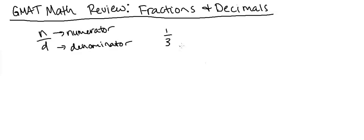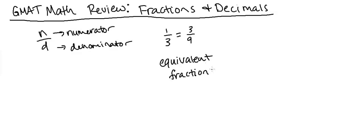Now let's talk about equivalent fractions. The word equivalent really just means equal. If I gave you the fraction three ninths, we could say that one third and three ninths are equivalent fractions because they hold the same value. If you were to turn either into a decimal, you'd get 0.33 repeating for both.